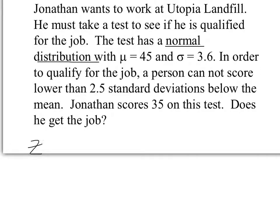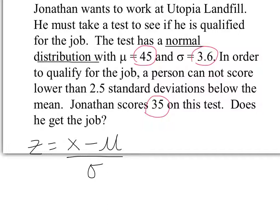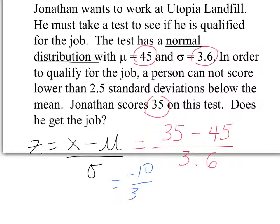The formula is z equals the actual observation minus the average divided by the standard deviation. The average is 45, the standard deviation is 3.6, and Jonathan's score is 35. Substituting: z equals 35 minus 45 divided by 3.6, which gives negative 10 divided by 3.6. Jonathan's z-score is negative 2.778. The requirement is that he cannot be lower than 2.5 standard deviations below the mean, and he's at 2.778 standard deviations below — therefore, Jonathan does not get the job.